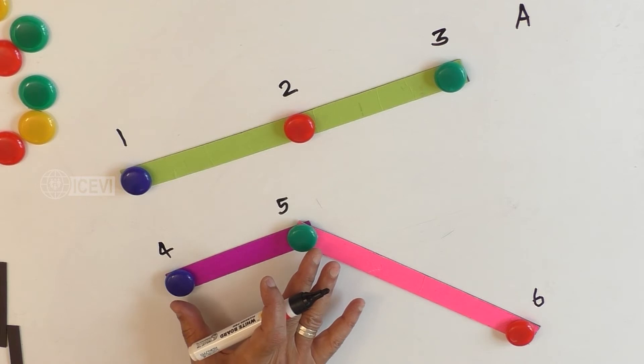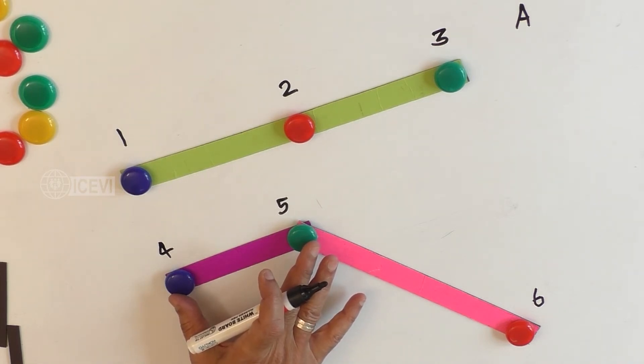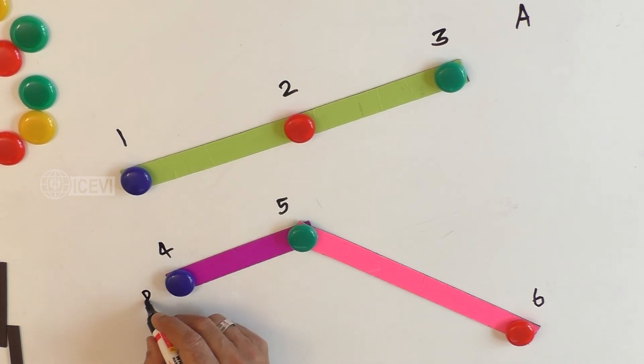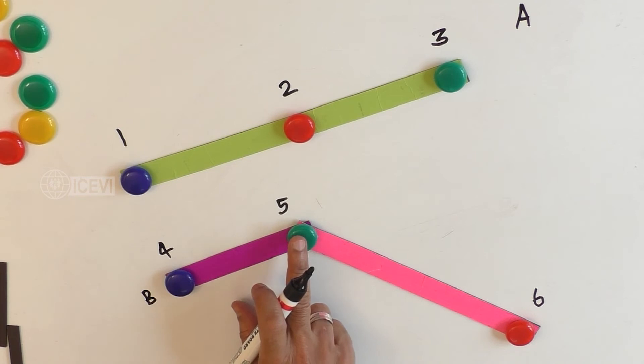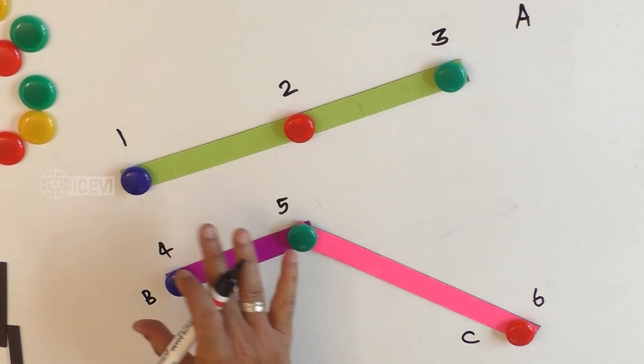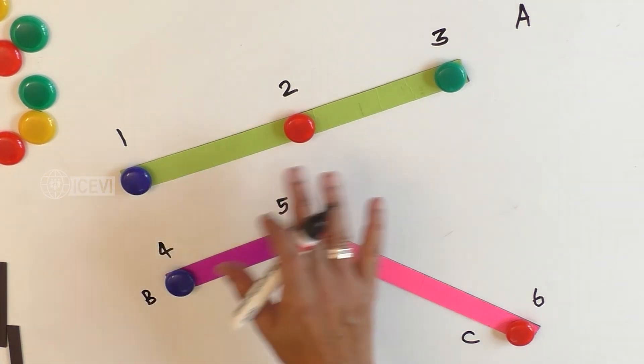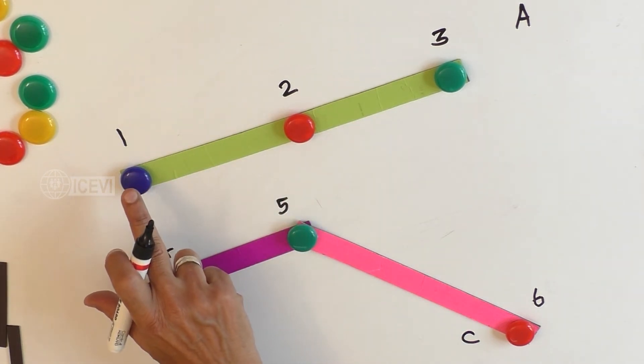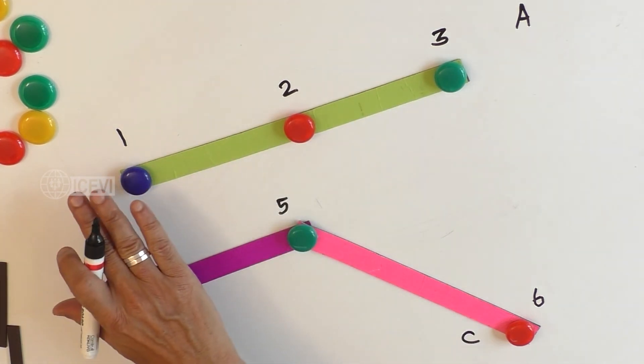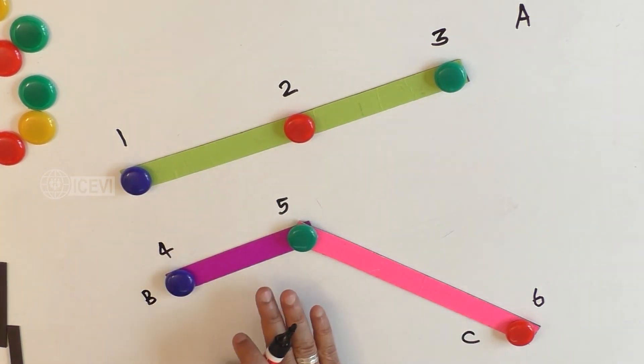Let us call the line connecting points 4 and 5 as B and the line connecting points 5 and 6 as C. Now, what happens in line A: the 3 points are 1, 2, and 3. They are on the same straight line.